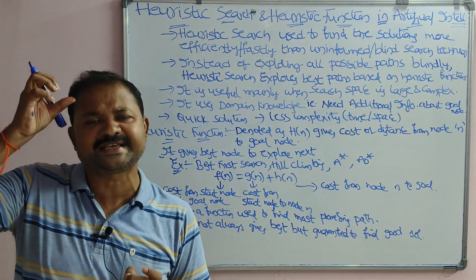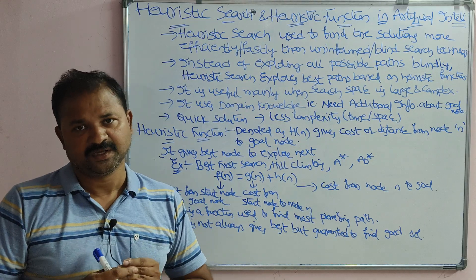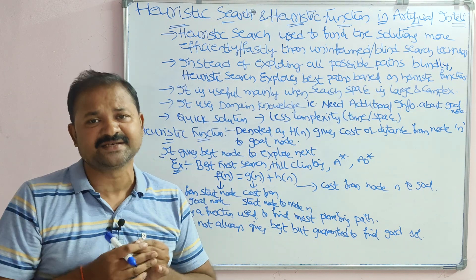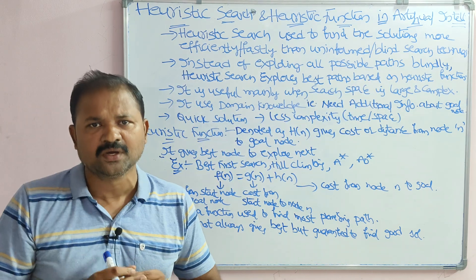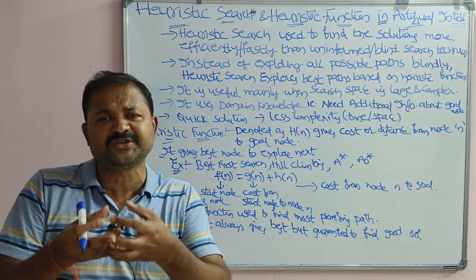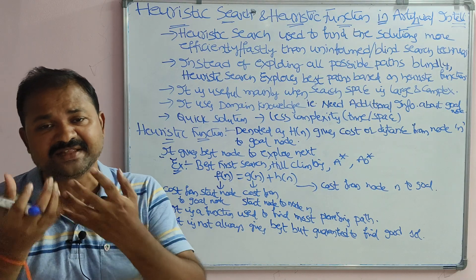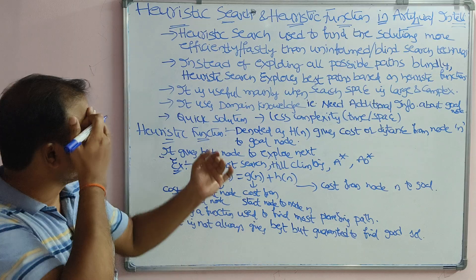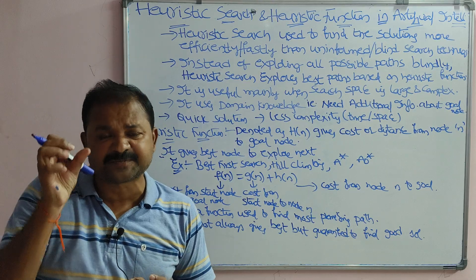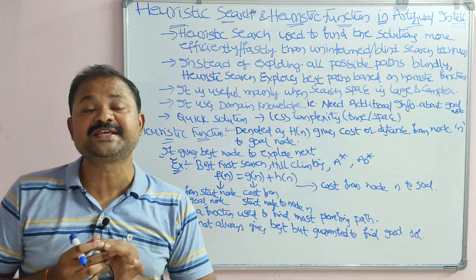Heuristic search comes under informed search technique. The major drawback of uninformed or blind search is that we have to blindly explore all the possible nodes. If the tree contains 100 nodes, we need to explore all 100 nodes blindly to check whether we have the goal node or not. With heuristic search, we explore only the best possible paths based on the heuristic function.